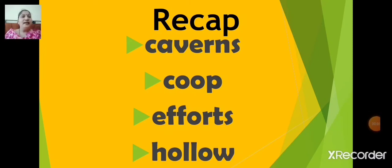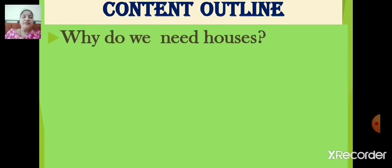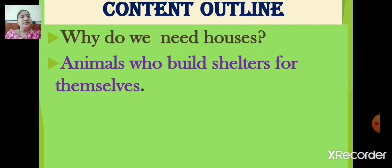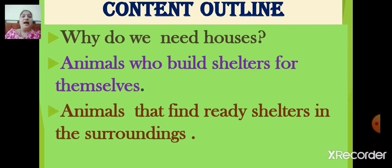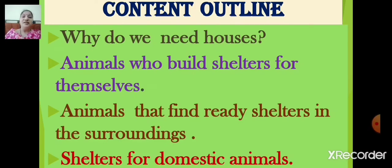Now let's go through the content outline. There are four topics: why do we need houses; animals who build shelters for themselves; animals that find ready shelters in the surroundings; and shelters for domestic animals. We have already finished the first topic. In the last part, we started with the second topic — animals who build shelters for themselves — and today we will continue with that.